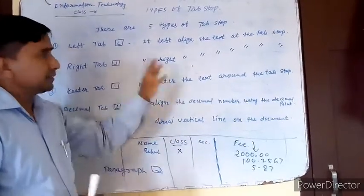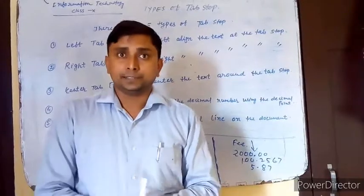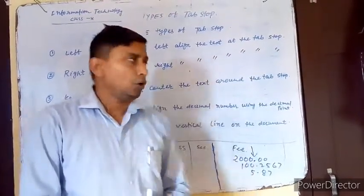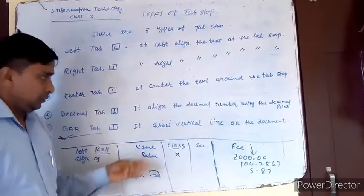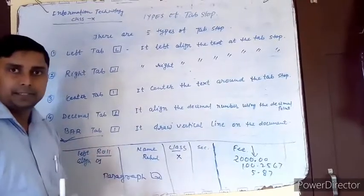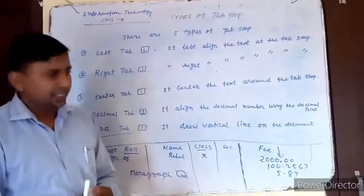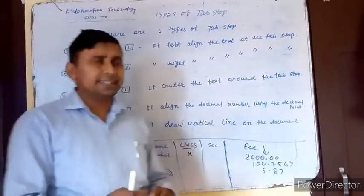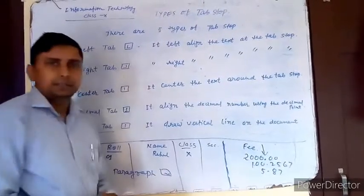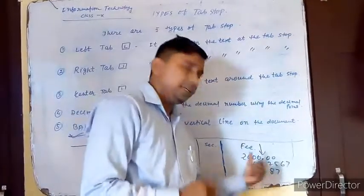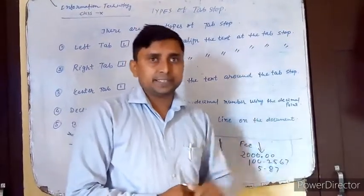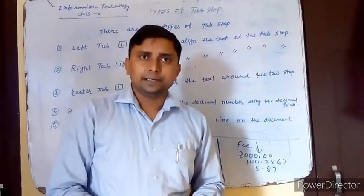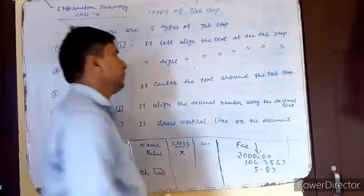I hope you all understand this concept. Tab stops are one of the most important tools through which we can make our documents meaningful and enhance the readability of your documents. If you have knowledge of tab stop keys, you can arrange text according to your requirements and write anything in a column-wise format. You can columnize data using bar tabs and align numeric values containing decimals using decimal tabs. That's all about tab stops — if you have any queries, please comment below.